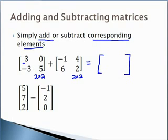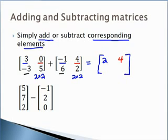When we add them together, we simply add the corresponding elements. So we take three plus negative one — both in row one, column one — to get two. Then zero plus four in row one, column two. Then negative three plus six gives us three, and five plus two is seven.